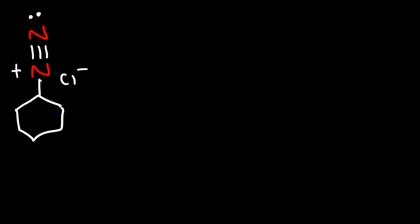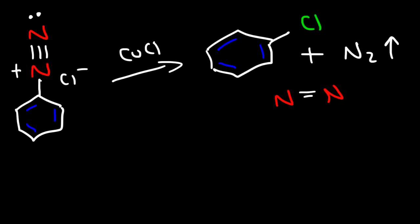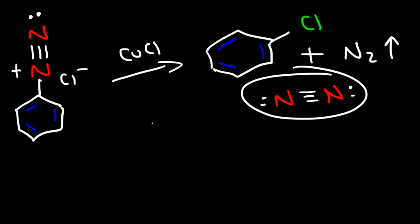We can take the arene diazonium salt and use it in a bunch of other reactions. If we react the arene diazonium salt with a copper-1 salt, it's known as the Sandmeyer reaction. For example, reacting with copper-1 chloride replaces the N2 group with a chlorine atom. The leaving group is nitrogen gas — a very good leaving group that is very stable, with a triple bond between the two nitrogen atoms and a lone pair on each side. The formation of this gas drives the reaction forward.